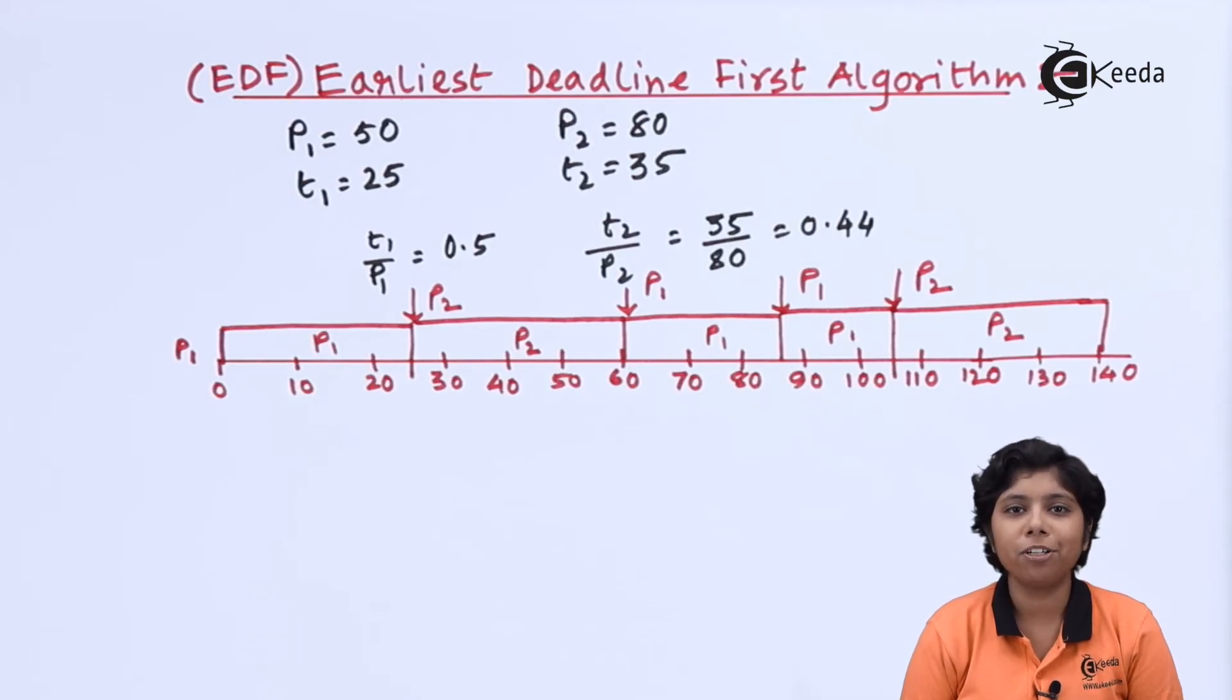Unlike rate monotonic algorithm, EDF does not require a process to be periodic, nor requires that the processing time should be always constant and equal to the CPU burst time. It only requires that the process should announce the deadline to the system beforehand of scheduling.